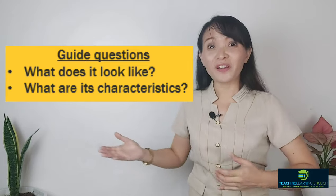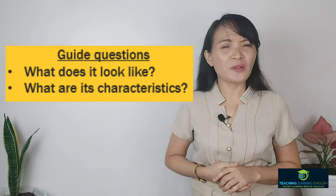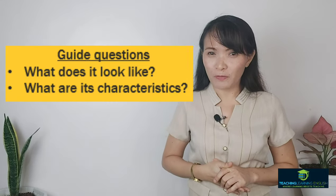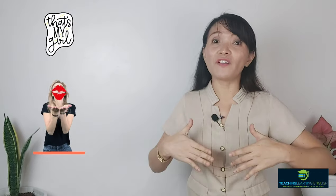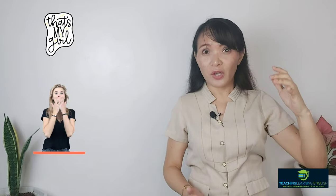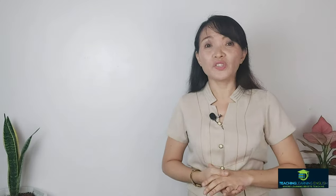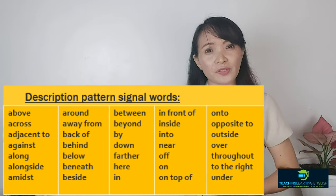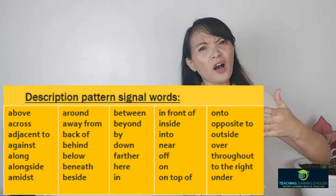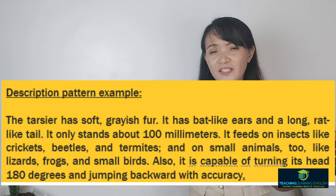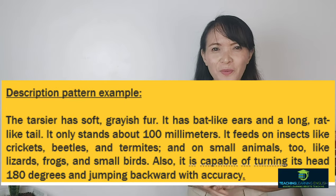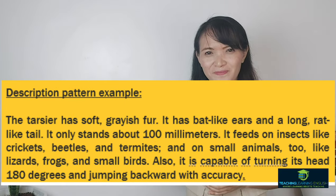Guide questions: What does it look like? What are its characteristics? When you say your girlfriend is beautiful, that's not a good description — you have to describe how beautiful, how tall she is, or describe her eyes. Imagine that you are painting the minds of the readers. Common signals include: above, along, beyond, near. Here is the example of a descriptive paragraph — it is a short paragraph, so not many signals have been used.